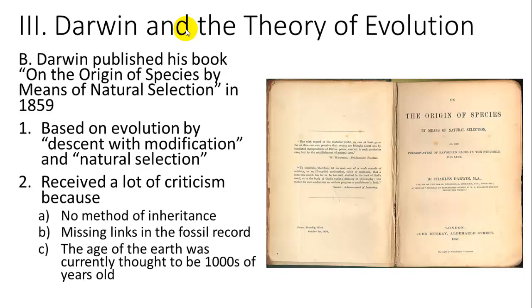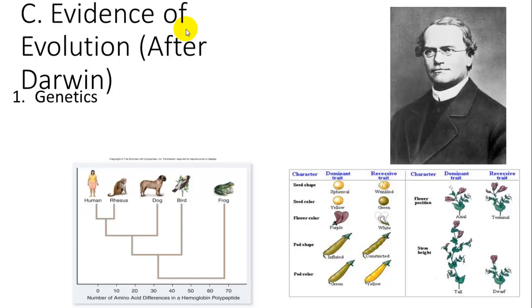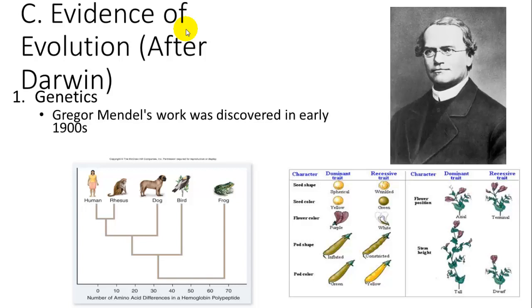Since publication, a lot of evidence has been added to support this theory. First, genetics was discovered with the work of Mendel around the beginning of the 1900s. Then later, the structure of DNA and the ability to sequence genes allowed us to really see and manipulate genes — this is the way that traits are passed from one generation to another. So a mode of inheritance had been found in genes.